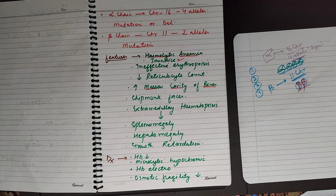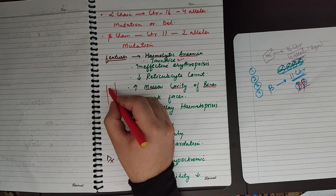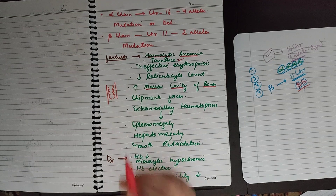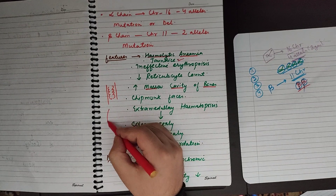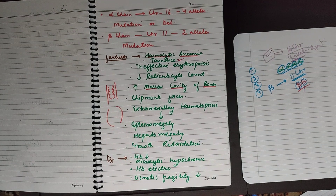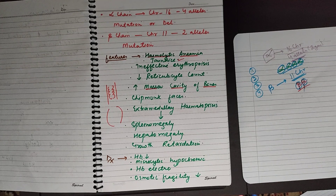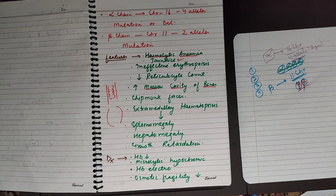To compensate for the excessive destruction of RBCs, the bone marrow increases its activity, which results in an increase in the marrow cavity. If a normal bone has a certain amount of bone marrow, when RBC cells are getting destroyed more, the medullary cavity increases in size. When the size of the bones increases, it gives rise to characteristic chipmunk facies.